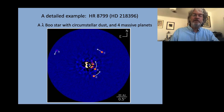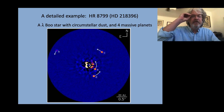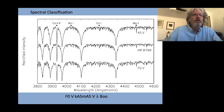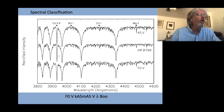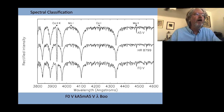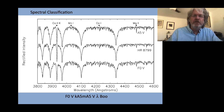It turns out it's a lambda Bootis star. It's got some planets going around it, and some circumstellar disk with dust, which is what you expect for a lambda Bootis star. We talked on Monday about — we've been through the spectral classification thing. We can look at the spectrum of the star and go, if I'm looking at the hydrogen lines, it's an F0 star. If I'm looking at these metallic lines, the hydrogen line is similar to the F0 star, but the metal lines are much more similar to an A5 star.